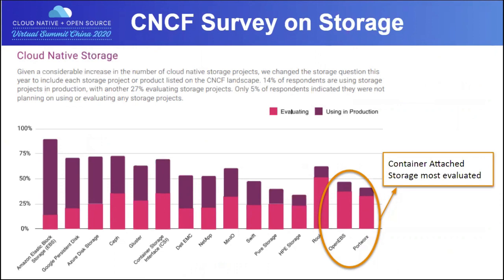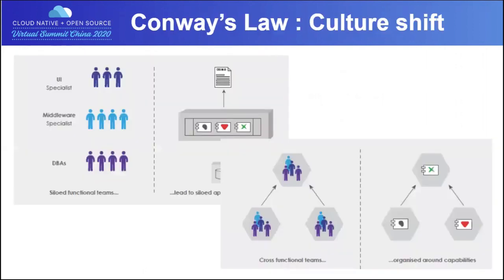If you look at the CNCF survey, which reflects that connecting to storage is not the only option, there are different options being tried out. OpenEBS and Portworx are a couple of them, which follow the container-attached storage pattern. One thing about this survey is CSI is also treated as a storage, which it is not. Some specific projects like Ceph, Gluster, OpenEBS, and Portworx are examples of applications that run within Kubernetes and actually provide storage only to stateful workloads.